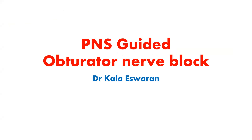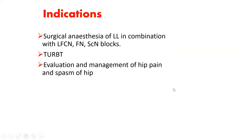Selective obturator nerve block was first described by Gaston Leban in 1922. The obturator nerve was always a part of the three-in-one block described by Vini, and hence it was used in surgical anesthesia of the lower limb in combination with the lateral femoral cutaneous nerve, femoral nerve, and sciatic nerve blocks.